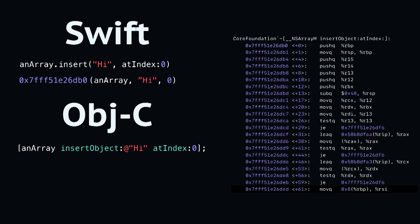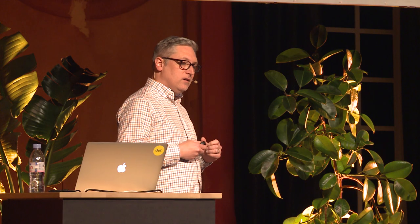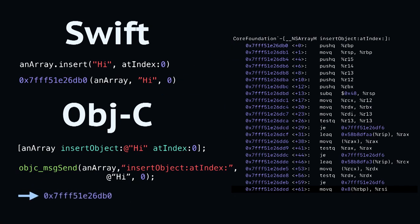Objective-C, on the other hand, does not even know at compile time whether the method is going to exist at runtime. That's one of the great powers of Objective-C, and one of the great pitfalls. Everything in Objective-C compiles down to objc_msgSend, whose job is to find an implementation for the method selector at runtime. If it finds it, it calls through to it — just like Swift would, but all done at runtime.